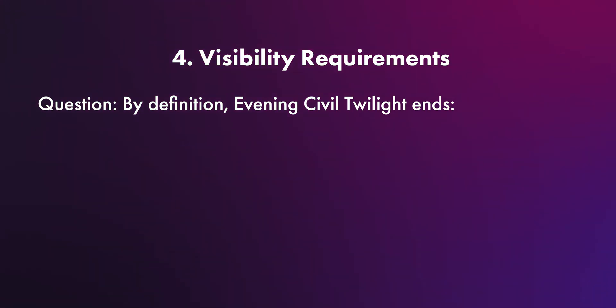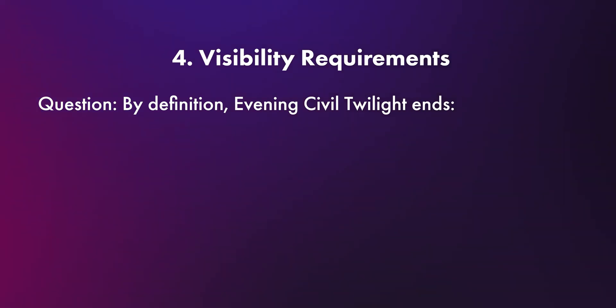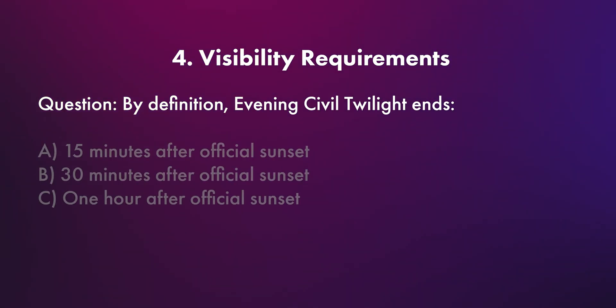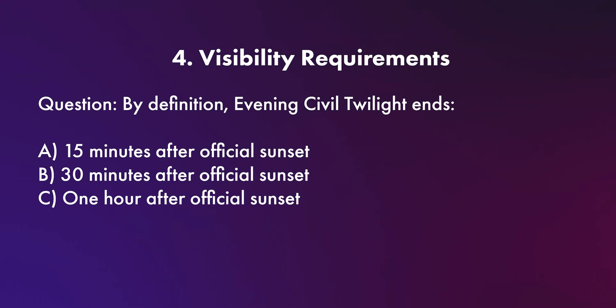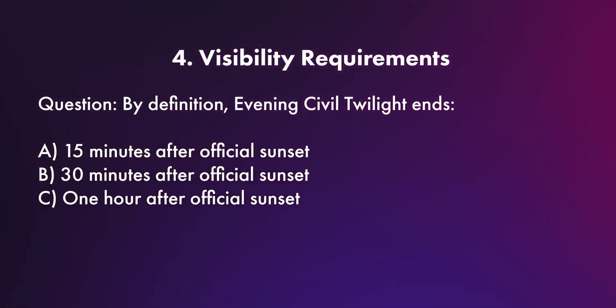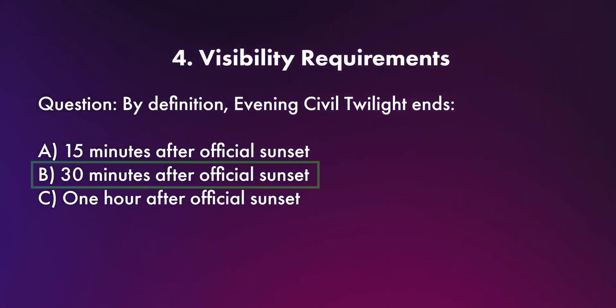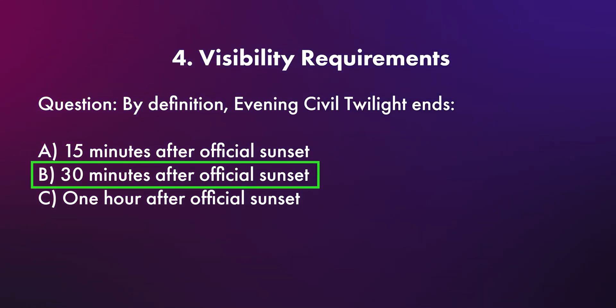Question four, which comes up quite frequently, has to do with visibility requirements. By definition, evening civil twilight ends — A) 15 minutes after official sunset, B) 30 minutes after official sunset, or C) 1 hour after official sunset? The correct answer is B, 30 minutes after official sunset. They might give you a scenario like: if sunset is at 9:00 PM, when does evening civil twilight end? The answer would be 9:30 PM.